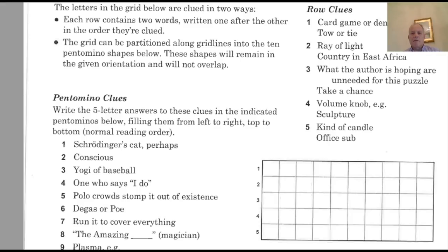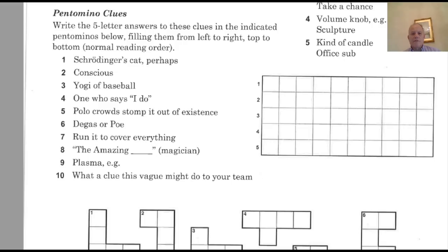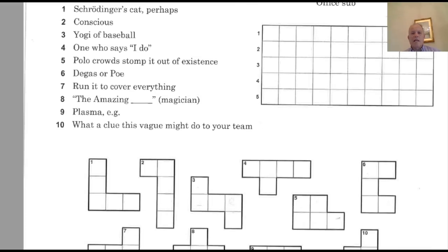We have some kind of American-style crossword clues. To look at the pentomino clues first, and I'll fill these in in a kind of macro bit of Excel that a friend of ours has created for us. But one, Schrodinger's cat, perhaps. Remember, these answers are all five letters. Well, Schrodinger's cat's obviously the physics thought experiment about a cat that's either dead or alive when it's discovered. So alive is possible. Number two, conscious. I would have thought that was awake or aware.